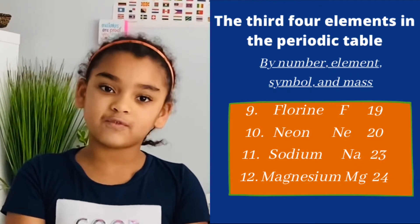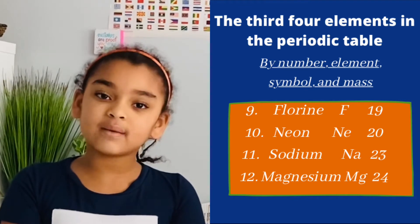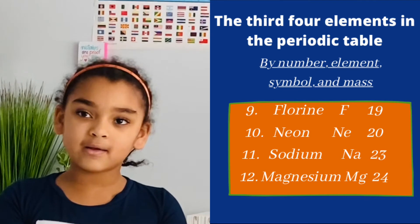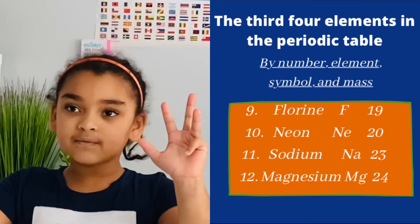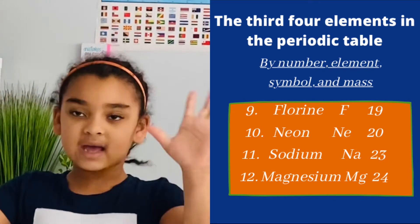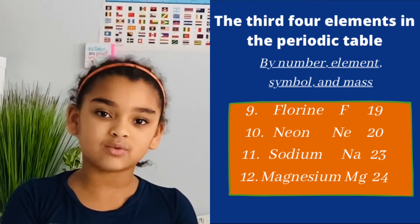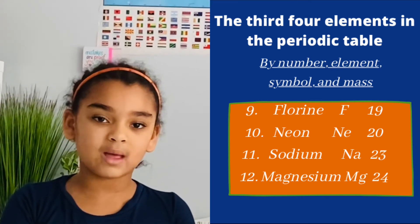What are the third four elements in the periodic table? By number, element, symbol, and mass. 9, fluorine, F19. 10, neon, NE20. 11, sodium, NA23. 12, magnesium, MG24.